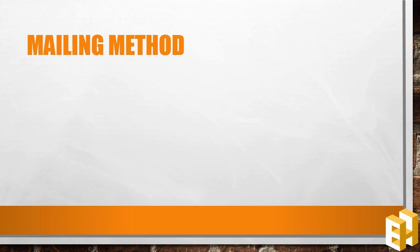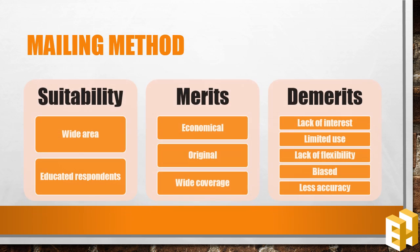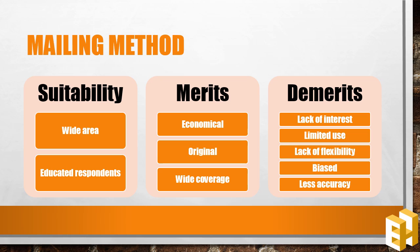Lastly, we have collecting information through questionnaires and schedules. The investigator prepares the questionnaire to collect information. Under this method, we have firstly the mailing method, where questionnaires are mailed to the informants to fill and sent back to the investigator. This method is suitable when the study area is wide and when the respondents are educated. Merits: it is economical in terms of time, money and effort; the information being supplied by informants makes the data original; and it covers a wide geographical area. Demerits: informants don't take interest in filling and returning questionnaires, they might send incomplete questionnaires, only educated respondents can answer, questions cannot be changed as per the investigator's convenience, and biased respondents or difficult questions may lead to inaccurate answers.